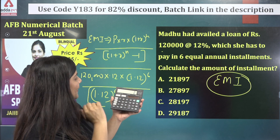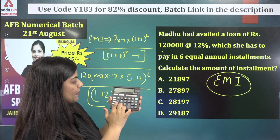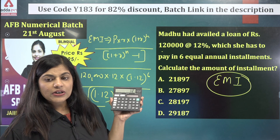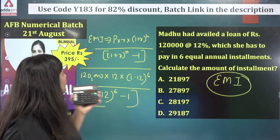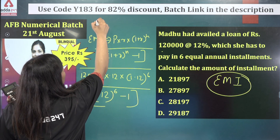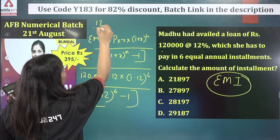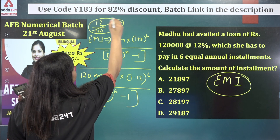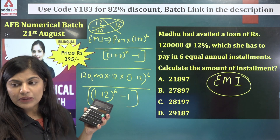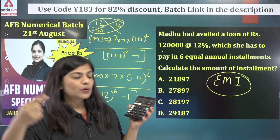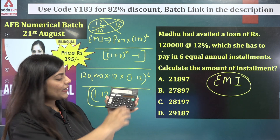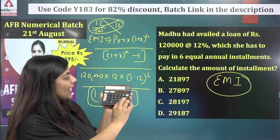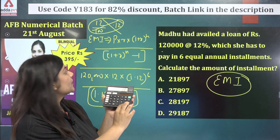First of all, you have to start with the power. You write 1.12 on your calculator. Why 1.12? Because the rate is 12 upon 100, so it is 0.12, and we add 1, making it 1.12. So on your calculator, enter 1.12, then press the multiply button.